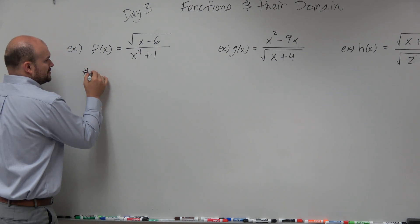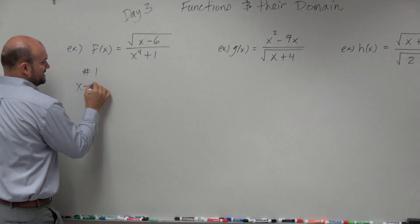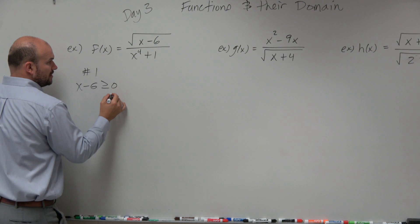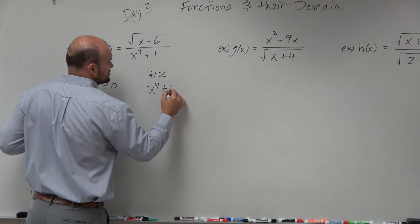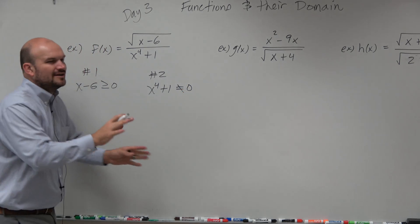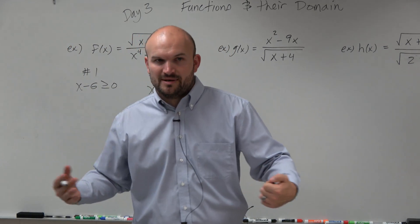So I'm just going to say restriction number one, which is set the radicand, which is right here, so we're going to have x minus 6 is greater than or equal to 0. And then restriction number two is x to the fourth plus 1 cannot equal 0. I know you guys had the square, but we're just going to do the fourth. You'll see why it's not really going to make a difference.